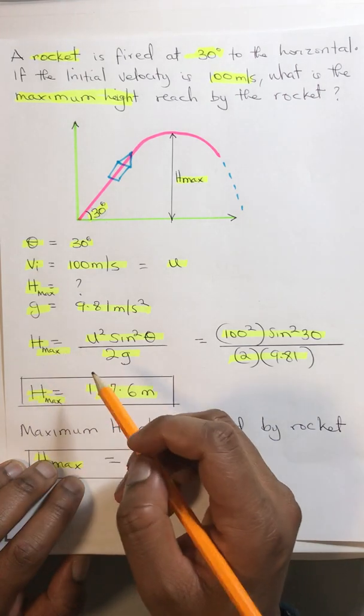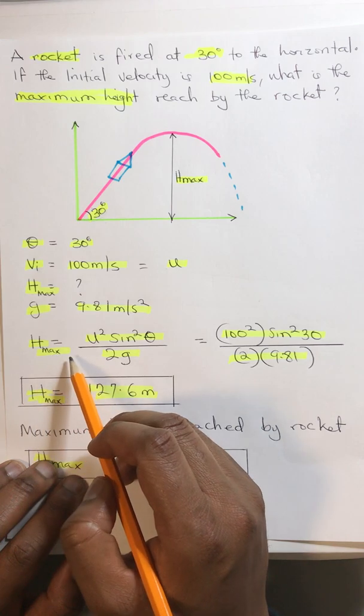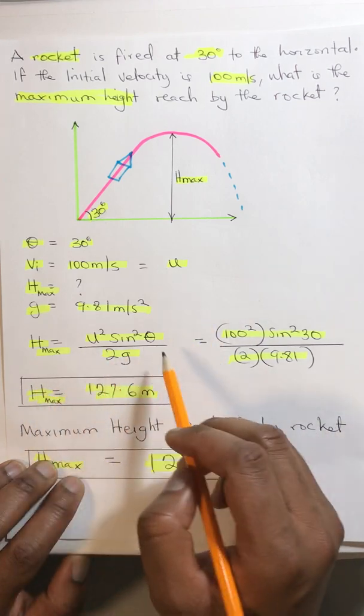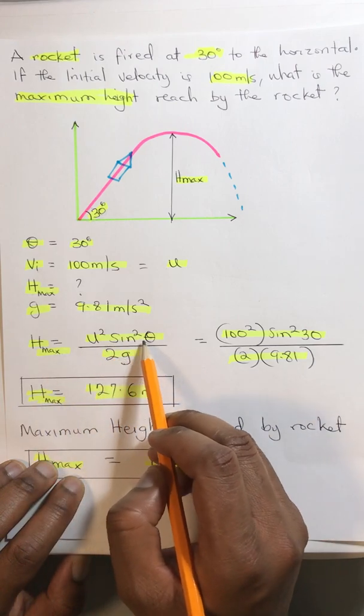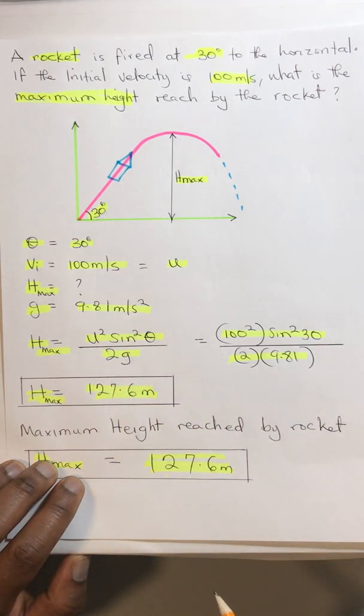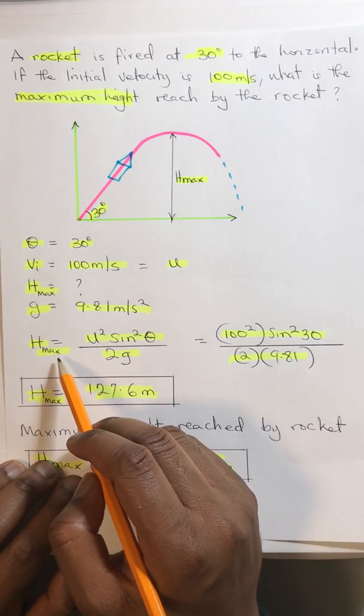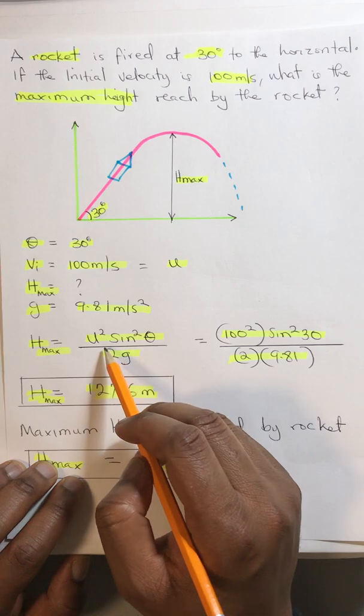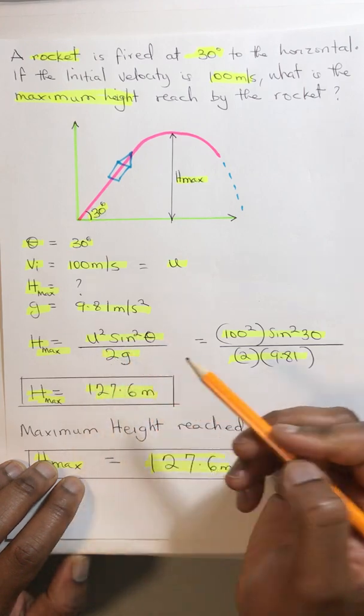Therefore, we have the formula for maximum height reached in a projectile which equals h max equals u squared sine squared theta over 2g.